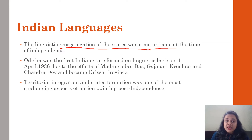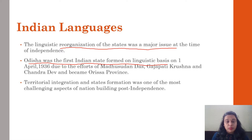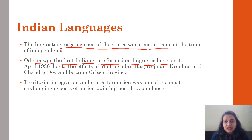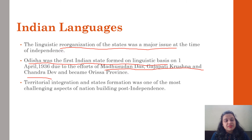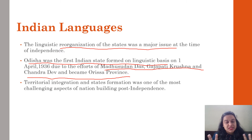Odisha was the first Indian state formed on a linguistic basis. Odisha was the first state formed on 1 April 1936, due to the efforts of Madhusudan Das, Gajpati Krishna, Chandradev and Vikrampur. Odisha province had a lot of linguistic formation significance.